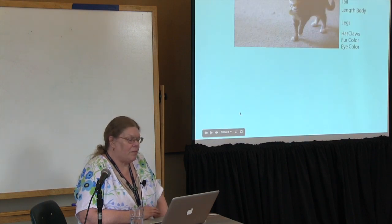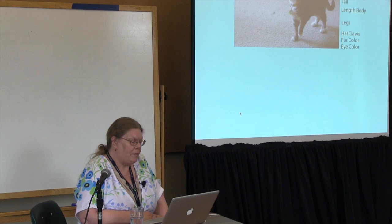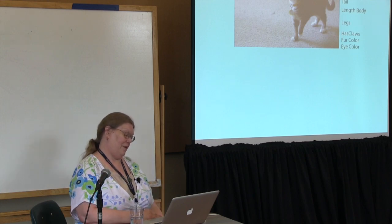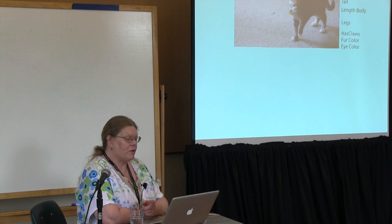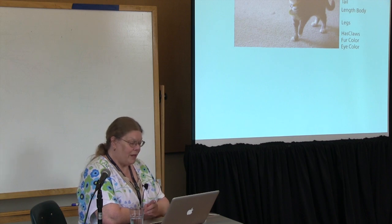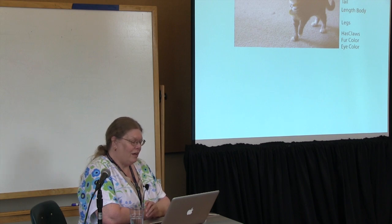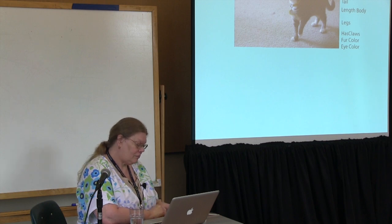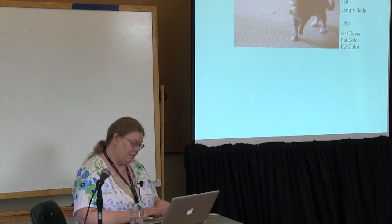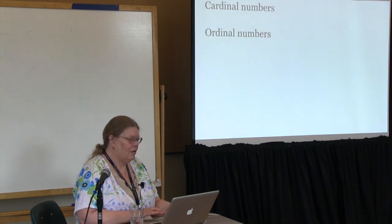Here is an example of Spock doing his happy kitty dance. This is how I identify what my variables are — they come from real things, not made-up things. He has a tail, a length of body, legs, claws, fur color, and eye color. Here are properties and numbers.